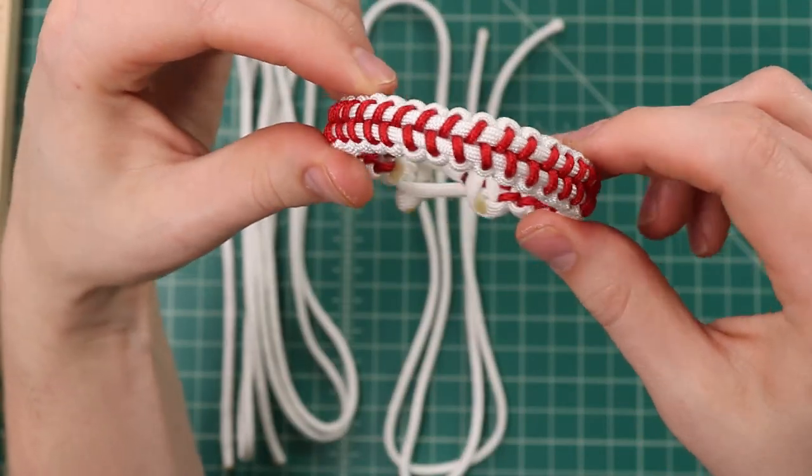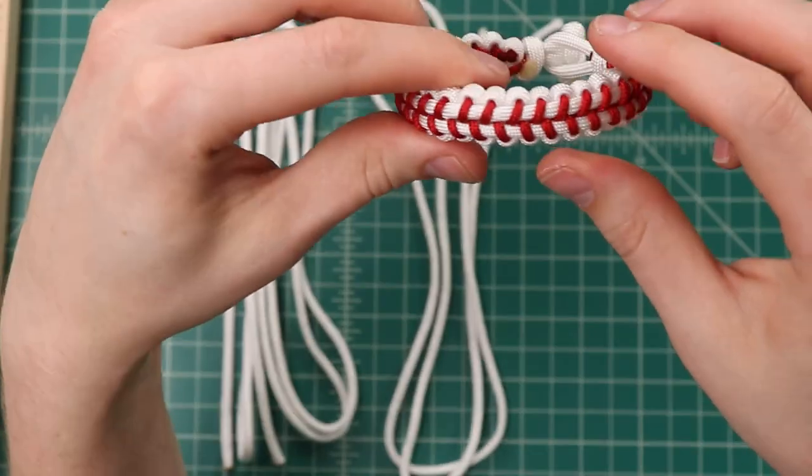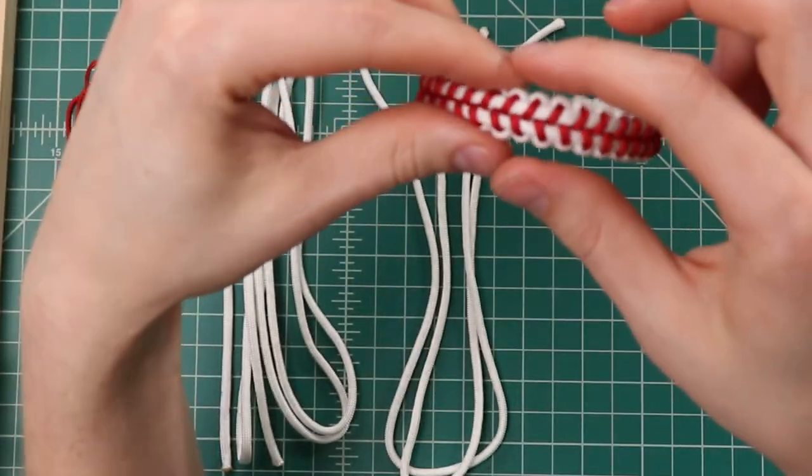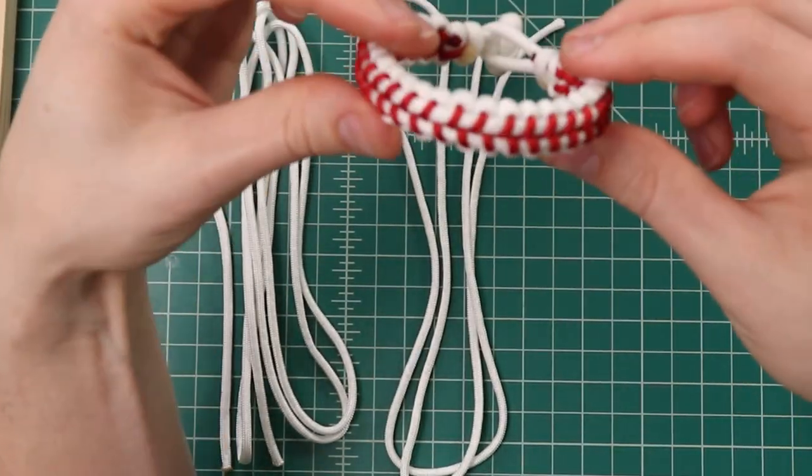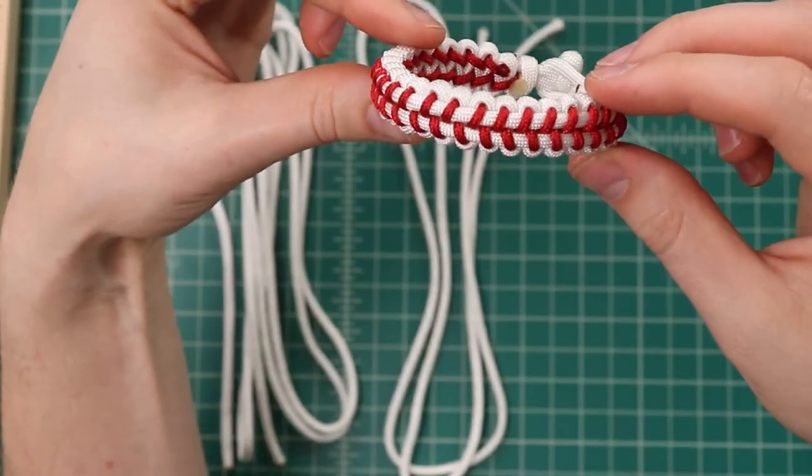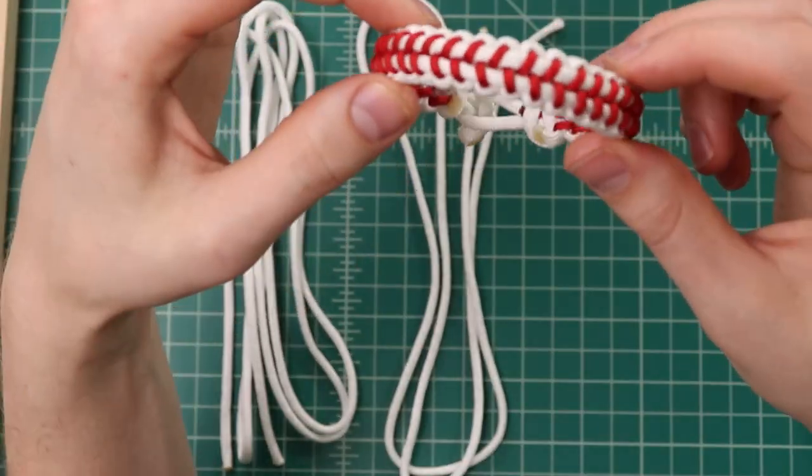So today we're going to be making this baseball stitched bracelet. I've seen people do this out of an actual baseball. They'll cut out the stitching and turn that into a bracelet, but we're making one out of paracord today and I think this is a pretty good replica.